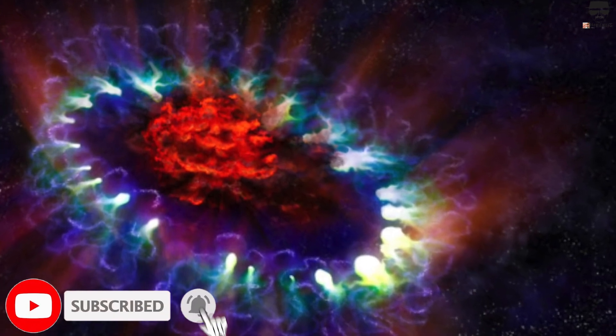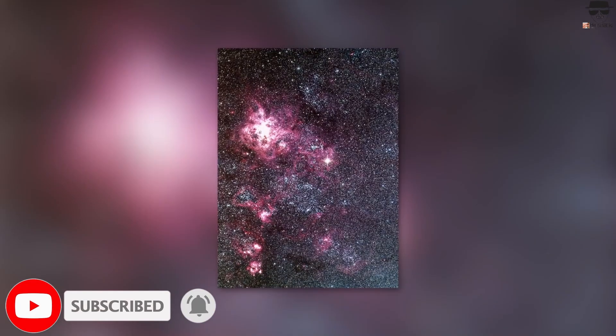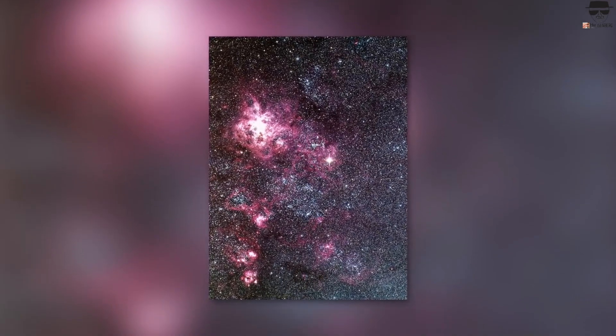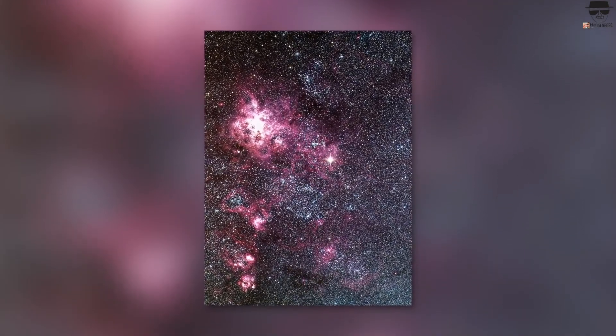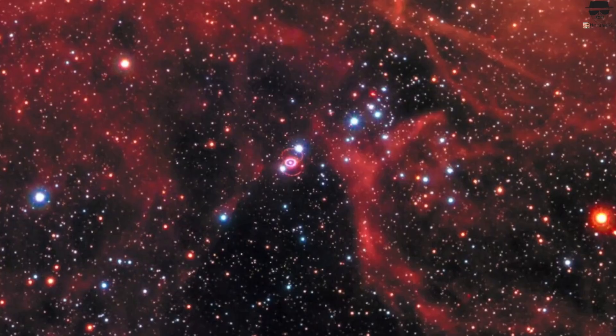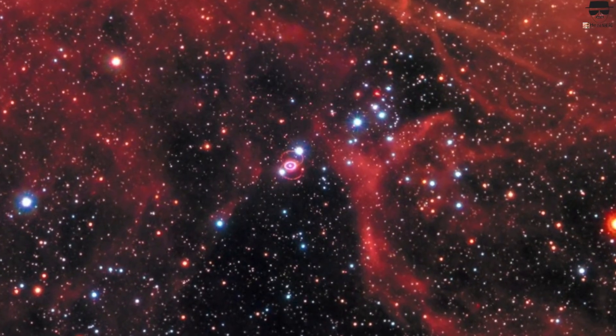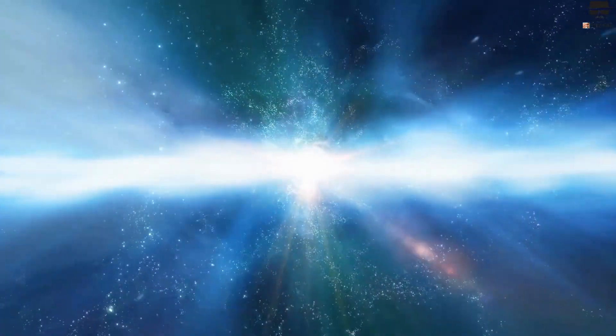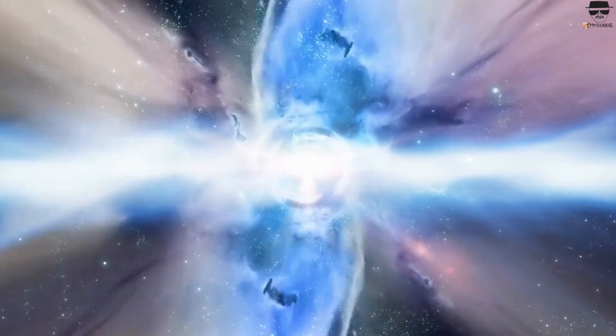Supernova 1987A was discovered in the Large Magellanic Cloud on February 24, 1987. The Large Magellanic Cloud is a dwarf galaxy which is in close proximity to the Milky Way. However, at about 16,000 light-years away, this event was much further away than Betelgeuse will be.